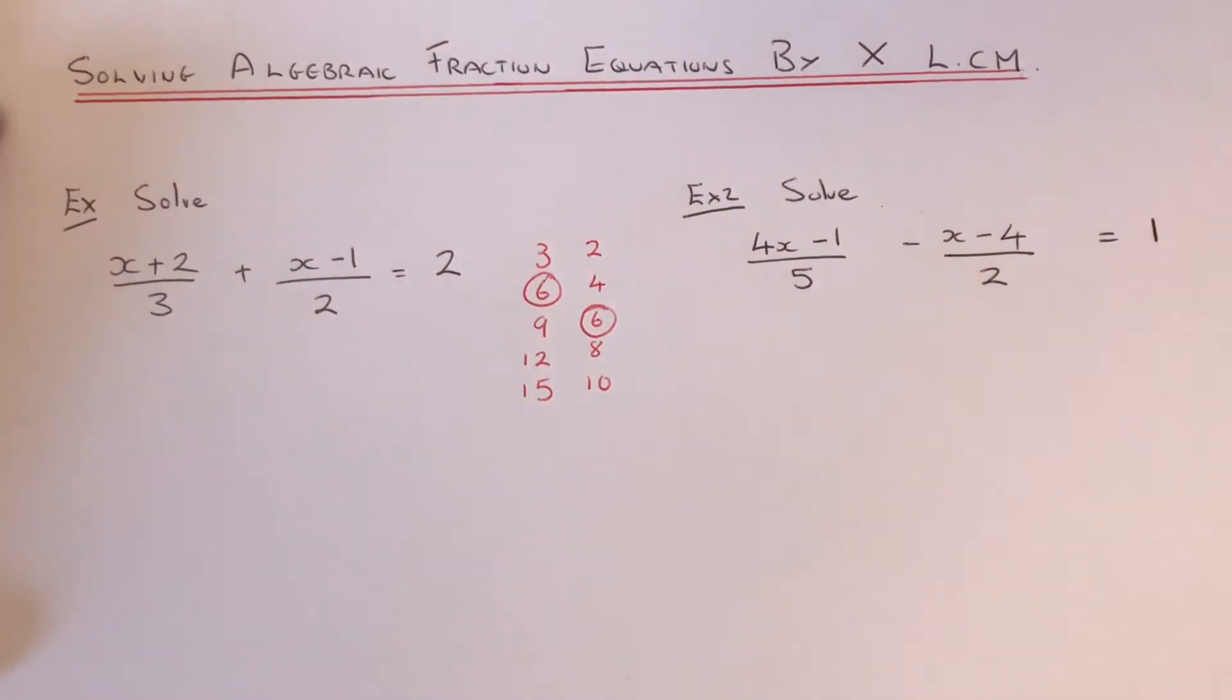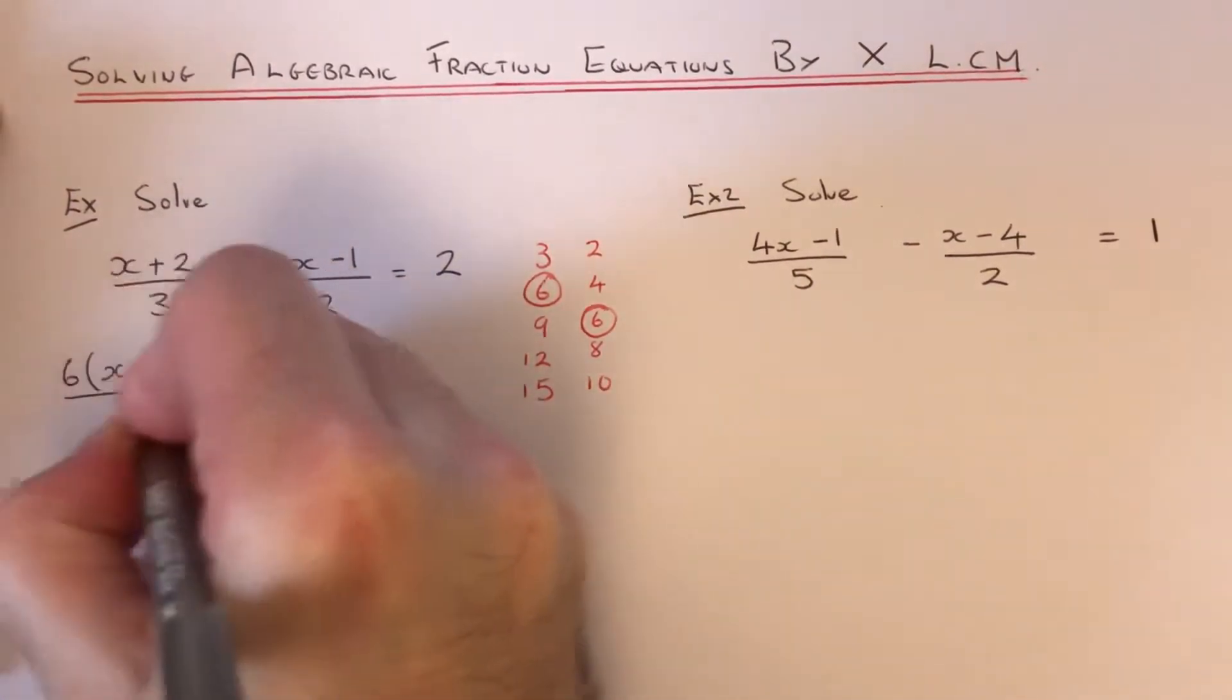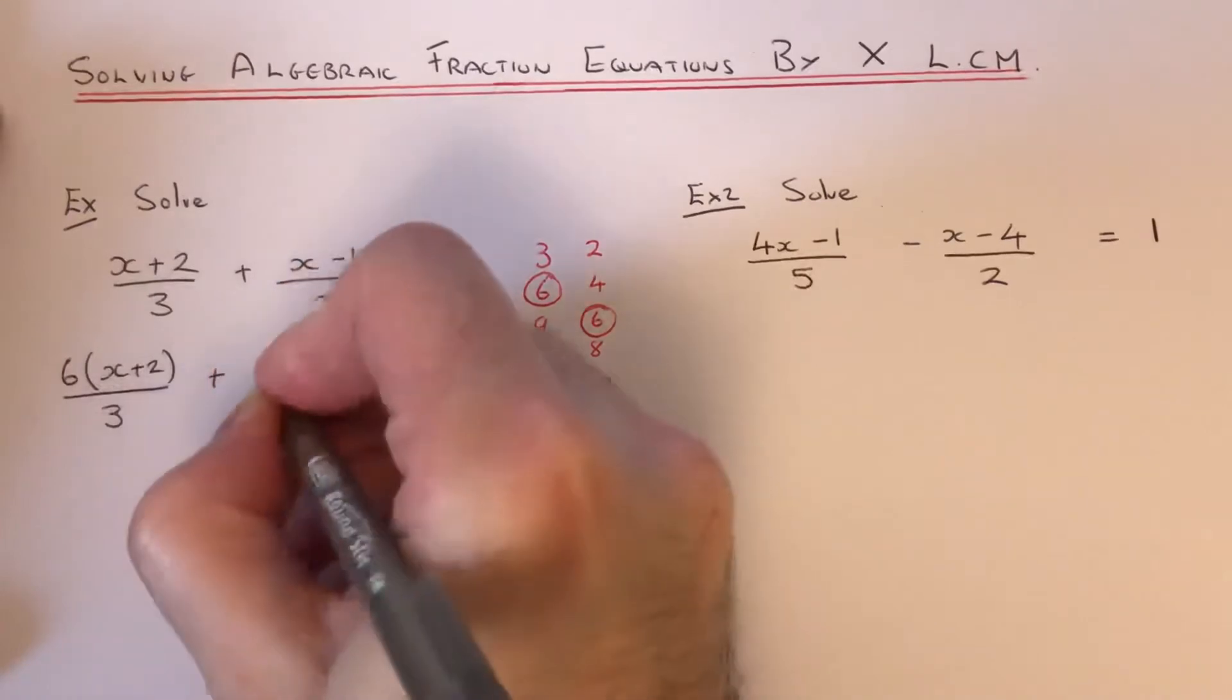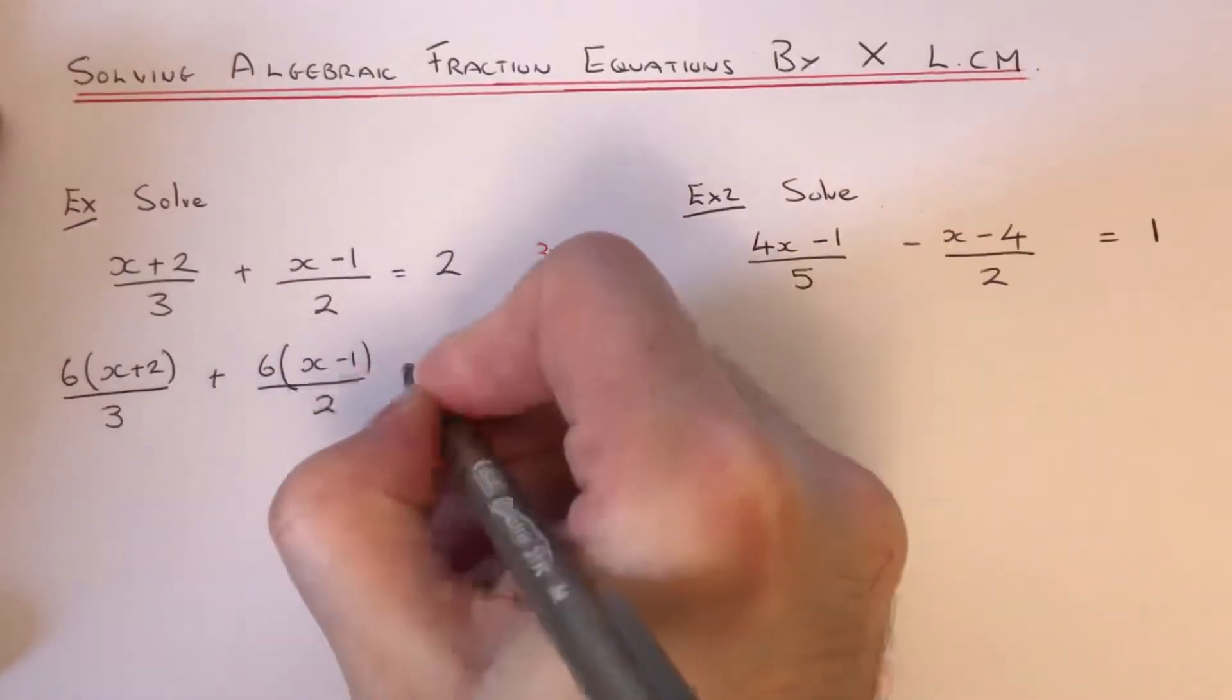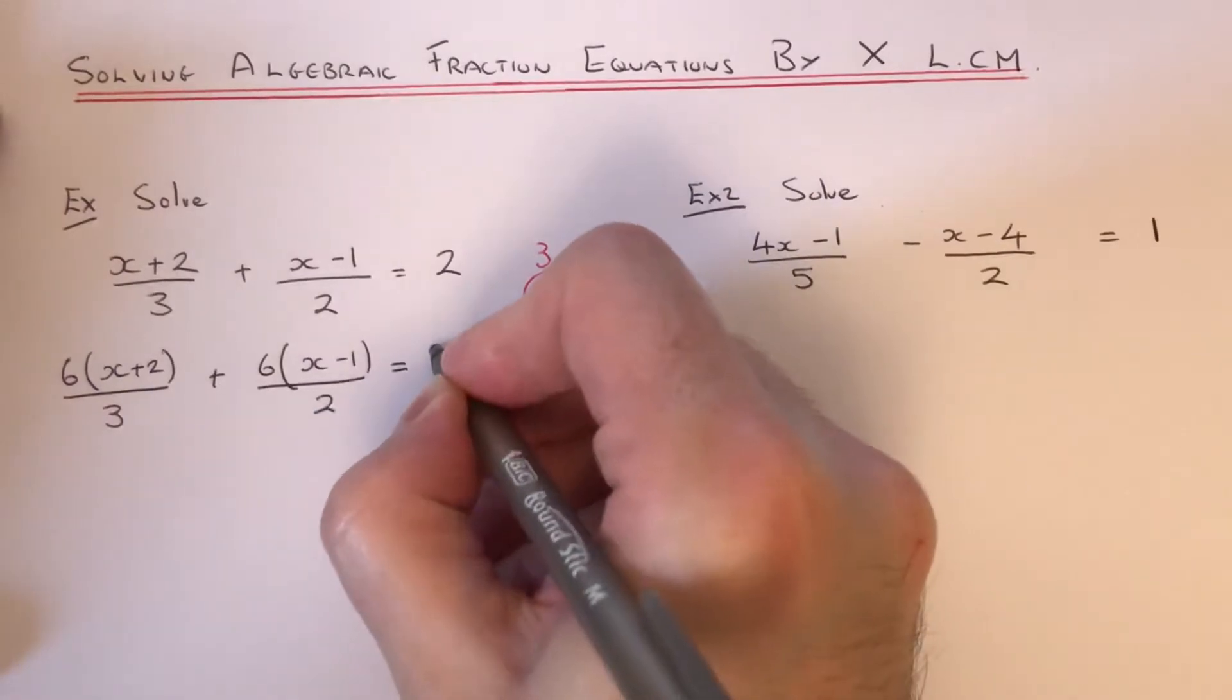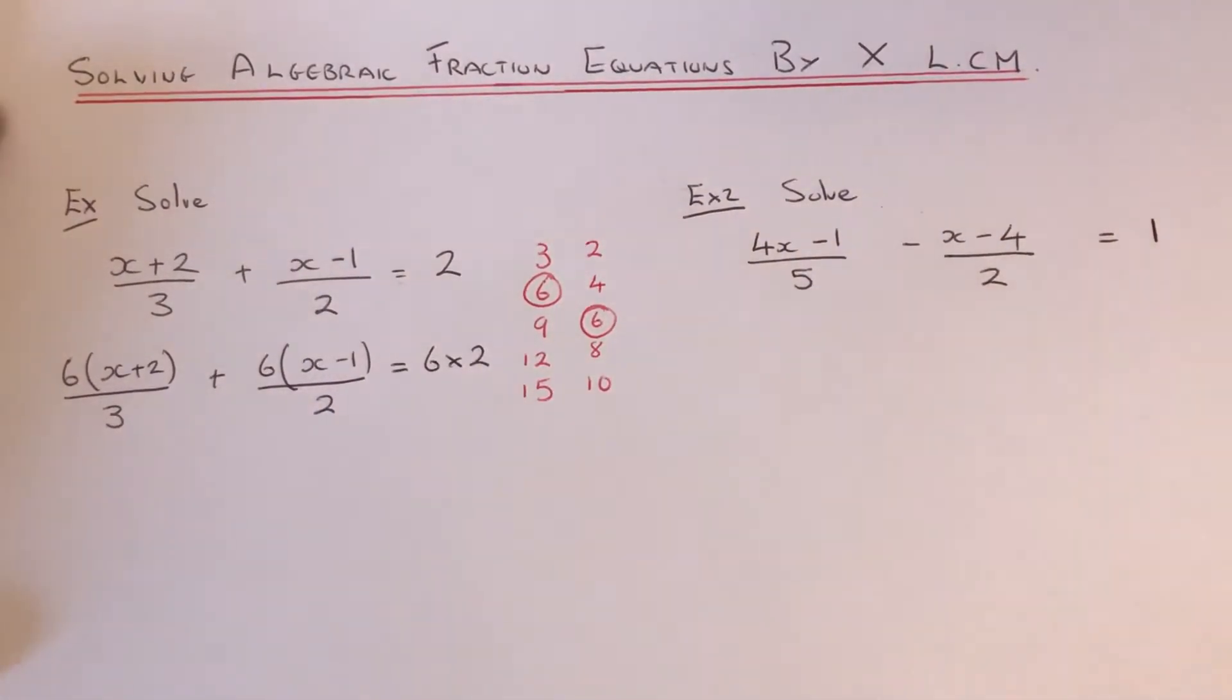So I'm going to multiply the equation by 6. This will give me 6 bracket x plus 2 over 3 plus 6 bracket x minus 1 over 2. And we also need to multiply the 6 by the 2. So I've put all my working out down there.